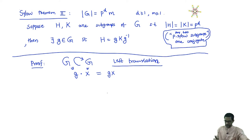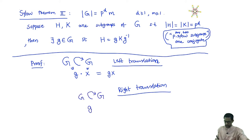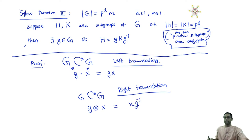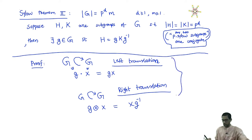And there is similarly an action by what is called right translation. This involves a little twist. G acts on G as follows — this is the right translation action. G acting on X by right translation: you have to multiply G inverse on the right. Remember that it is important to put the inverse; otherwise this does not satisfy the compatibility axiom for an action. So there are actually two translation actions, the left translation and the right translation action of a group G on itself.